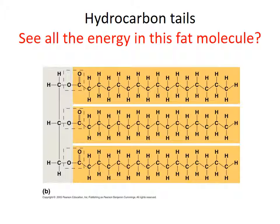Let's look at this fat molecule, which we call a triglyceride. 'Tri' stands for the three fatty acid tails coming off of it — those big long yellow chains. Look at all those hydrogen-carbon bonds; each one represents energy. That's why fat is so great at storing energy. Just like oil and gas, fat consists of long hydrocarbon tails. Animals store excess long-term energy as fat because it's very compact, making it easier to move around.